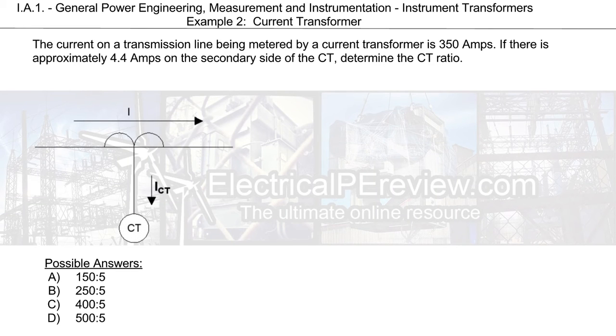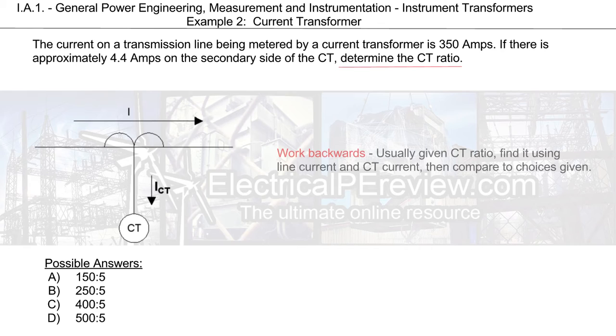We're going to draw our circuit for reference. First thing is what is the problem statement asking for? Usually we're given the CT ratio but this time around we're gonna have to find it on our own using the different currents given and then compare it to the choices given as the most likely answer. So let's begin.